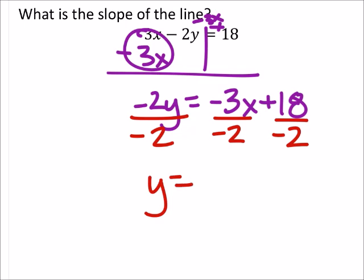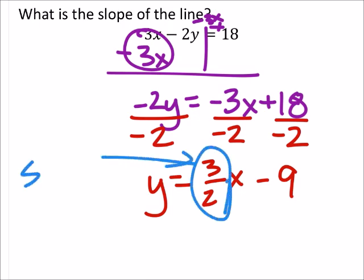So I've got y equals, that's now a positive 3 halves x minus 9. Not that that matters for this problem, because all we wanted was a slope, and my slope here is 3 halves.